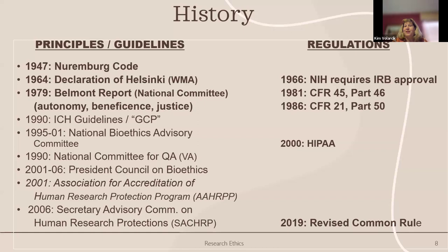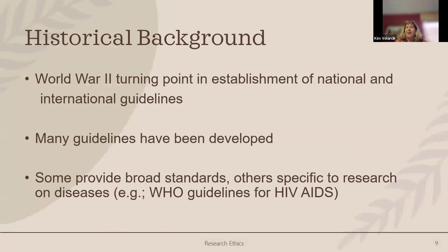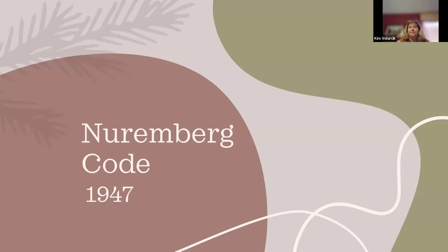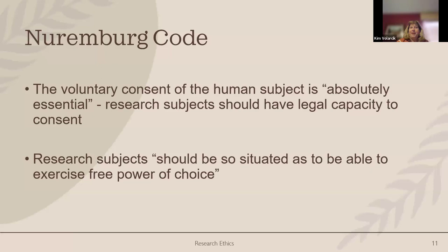In 1966 NIH came about, 1981 saw federal regulations for human subject research, 1986 brought FDA involvement, and in 2000 HIPAA came aboard. In 2019 the government revised the Common Rule, updating many things that had been in place since 1981. World War II was basically the turning point where many guidelines were finally developed, including those from the World Health Organization for specific diseases including HIV and AIDS.